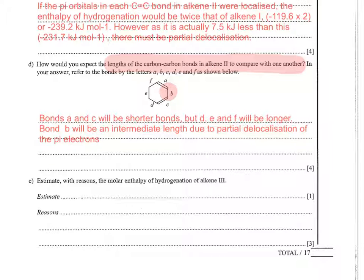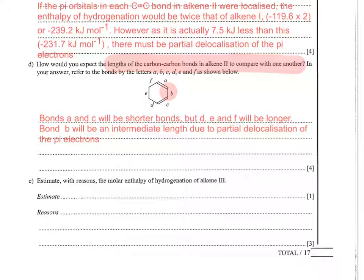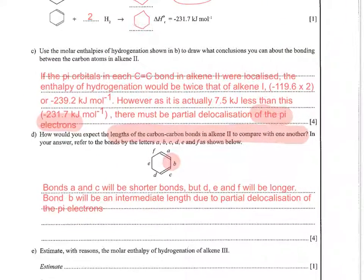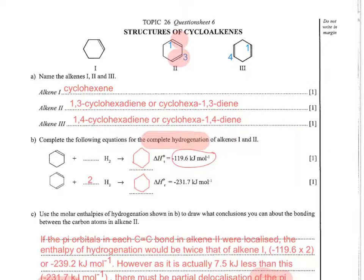I'm going to slightly improve my answer to part C by talking about the partial delocalisation of the pi electrons. Finally, it asks to estimate with reasons the molar enthalpy of hydrogenation of alkene 3. Alkene 3 is a slightly different version, an isomer of alkene 2. The carbon-carbon double bonds are opposite each other, in the 1 and 4 positions instead of the 1 and 3 positions.